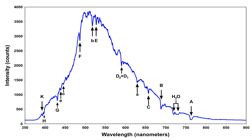Radiative broadening of the spectral absorption profile occurs because the on-resonance absorption in the center of the profile is saturated at much lower intensities than the off-resonant wings. Therefore, as intensity rises, absorption in the wings rises faster than absorption in the center, leading to a broadening of the profile. Radiative broadening occurs even at very low light intensities.